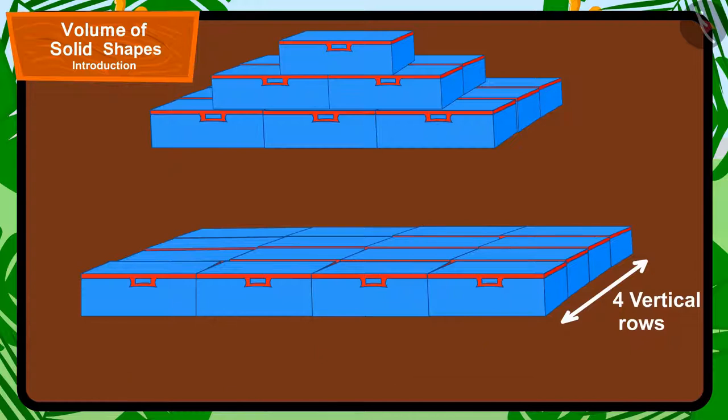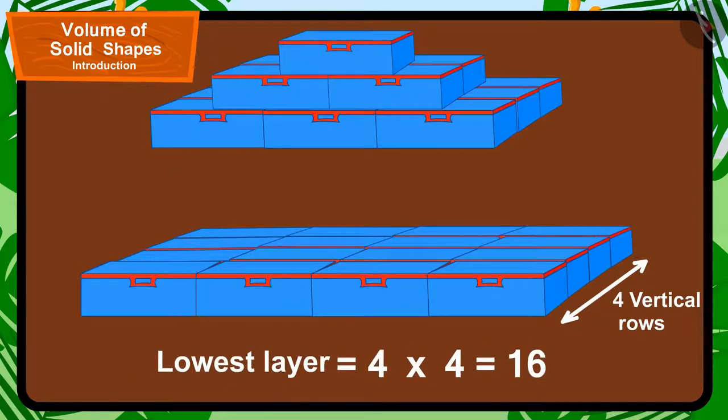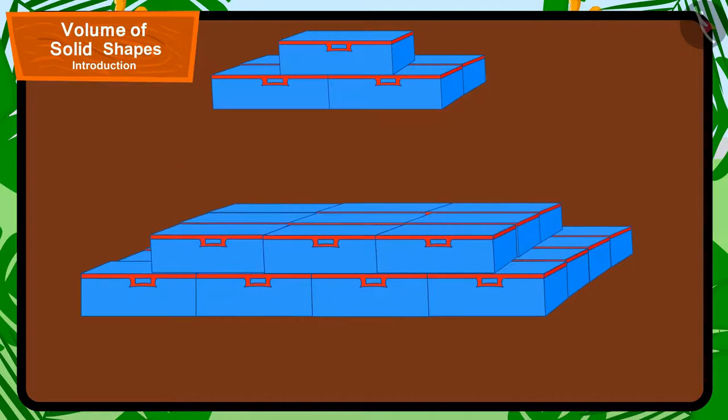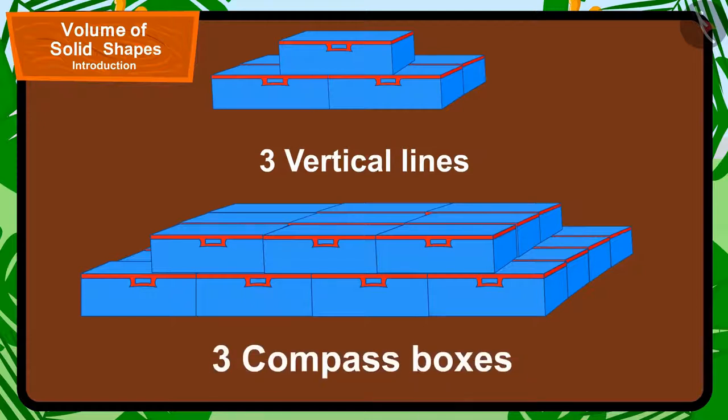That means 4 rows multiplied by 4 boxes, that is 16 boxes in the lowest layer. The layer above it has 3 vertical lines and each vertical line has 3 compass boxes.